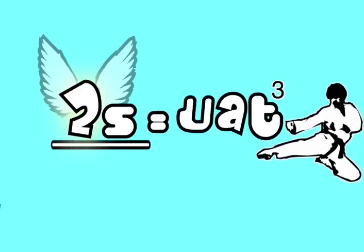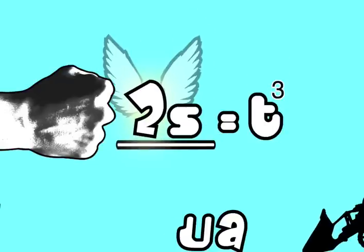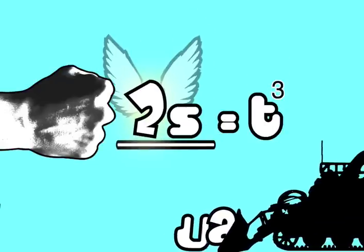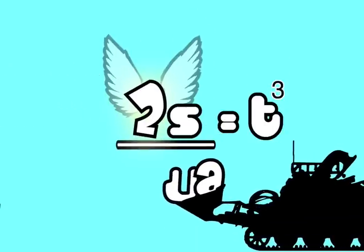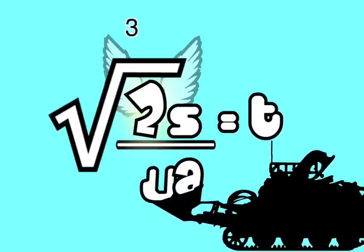Now we need to get the t cubed on its own. So we divide by ua and take s over to the other side. Now we just have to cube root the 2s divided by ua.